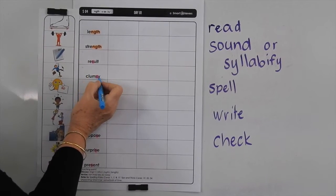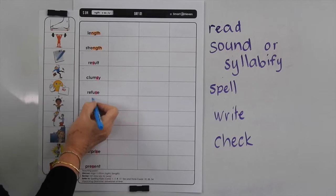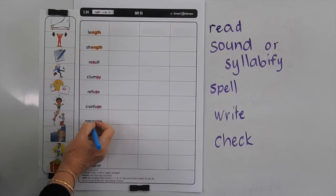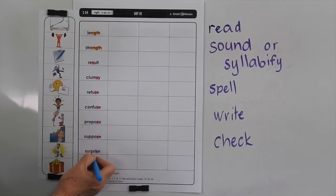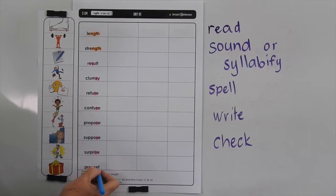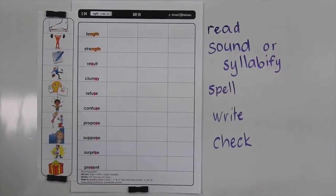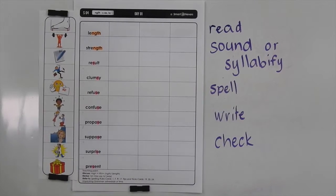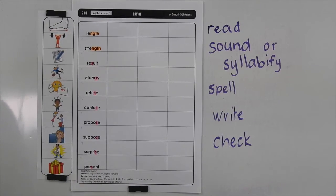Refuse or refuse, confuse, propose, suppose, surprise and present. So S can quite often make the Z sound. In fact, it makes the Z sound more than it makes an S sound.